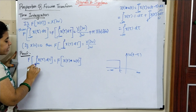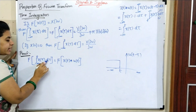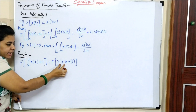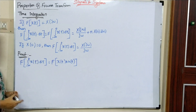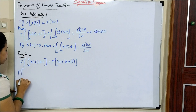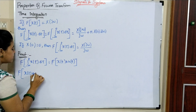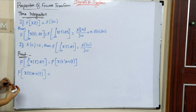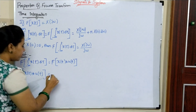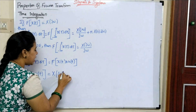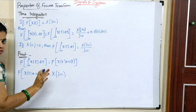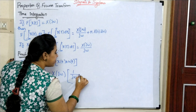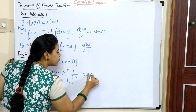So in the time domain, the Fourier transform of the integral from minus infinity to t of x(τ)dτ equals the Fourier transform of x(t) convolved with u(t). By the convolution property, convolution in the time domain becomes multiplication in the frequency domain. So X(jω) — the Fourier transform of x(t) — is multiplied by the Fourier transform of u(t), which equals 1/jω + π·δ(ω).